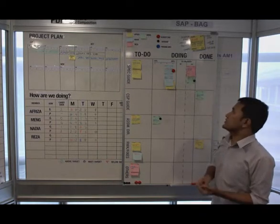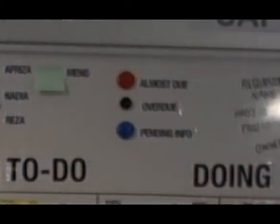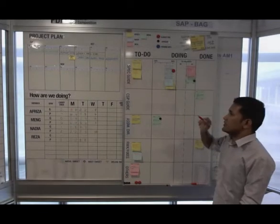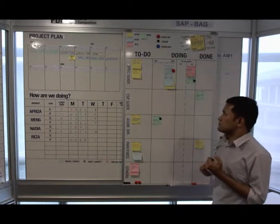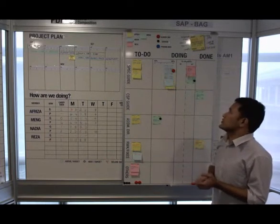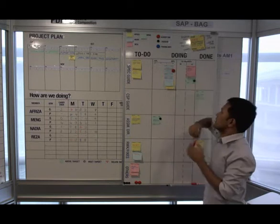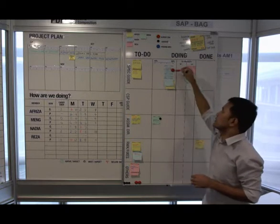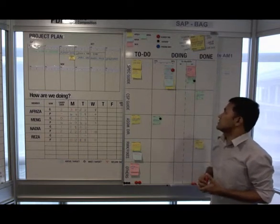We use a few indicators here. As you can see, we have three colors: red for almost due, black for overdue, and blue for pending information. Every day, we're going to review our task board and check which project is almost due, which one is overdue, and which one is pending information, and we stick it on that particular project. For example, this project is almost due — the due date is tomorrow — so we put it here just to make everyone aware.